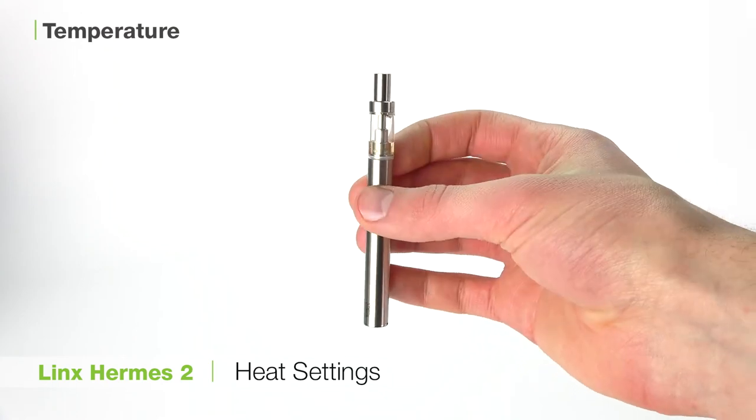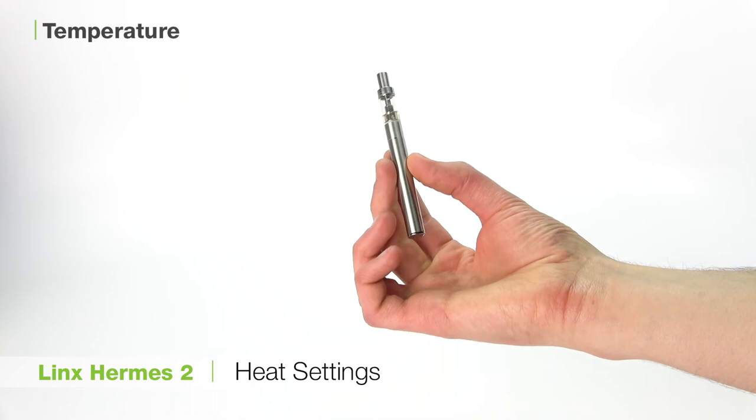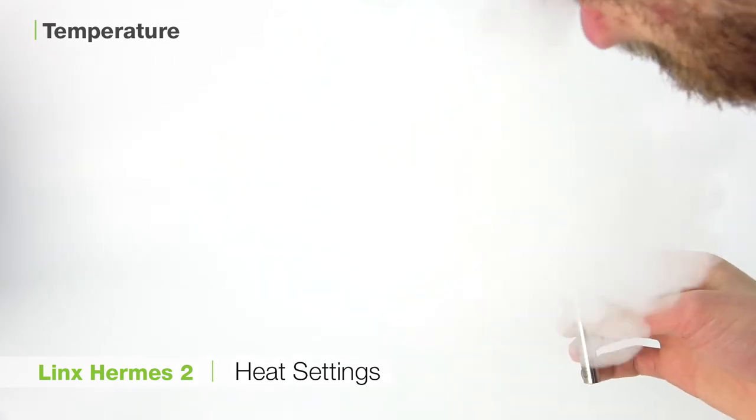The Lynx Hermes II only has one temperature setting, with voltage ranging from 3.3 volts to 4.2 volts, depending on how long you hold your draw for.